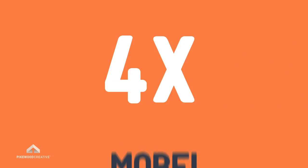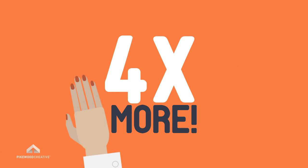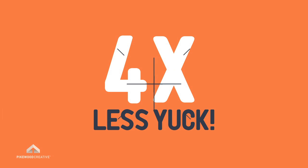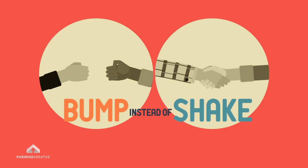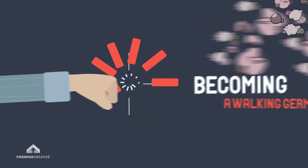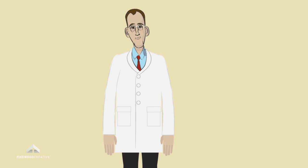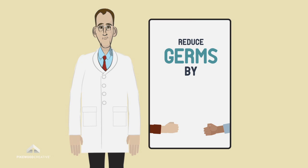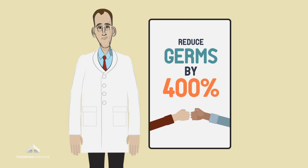Think about that. Four times more. You'll have four times less yuck on your hands if you bump instead of shake. Four times less means your chance of spreading, catching, and becoming a walking germ bag is reduced big time. We think if you're able to reduce the amount of germs on your hands by 400%, now that's significant.